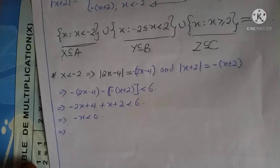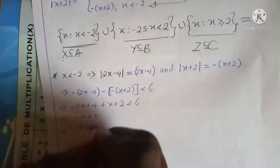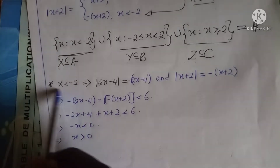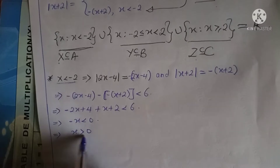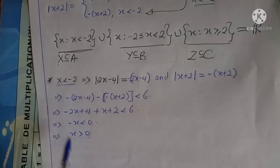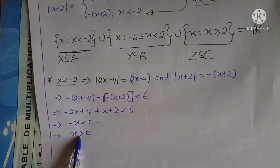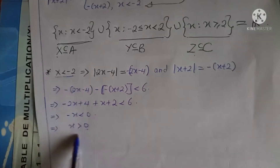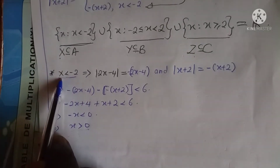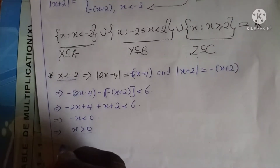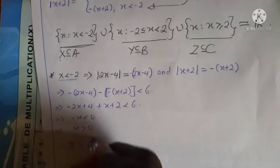Simplifying gives negative x less than 0, and dividing both sides by negative 1 we get x greater than 0. However, we are working in set A where x is less than negative 2. Finding the intersection of x greater than 0 and x less than negative 2, we see the intersection is an empty set — there is no value of x which is less than negative 2 and at the same time greater than 0. So our set x is just an empty set.